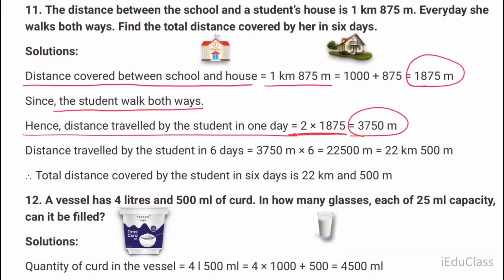Distance traveled by the student in six days is 3750 times 6 equals 22,500 meters equals 22 kilometers 500 meters. Total distance covered by the student in six days is 22 kilometers 500 meters.